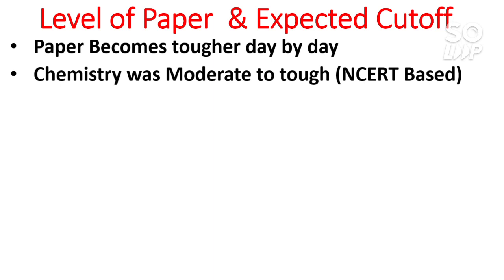Chemistry was moderate to tough, which made the paper really tough because everyone expects chemistry to be the easiest and most scoreable subject among the three. Chemistry used to be the easiest subject over the last two to three years, but in this attempt — as was the case for Shift 2 on the 24th and 25th as well — chemistry was moderate to tough for Shift 2, unlike Shift 1 where chemistry was easiest.